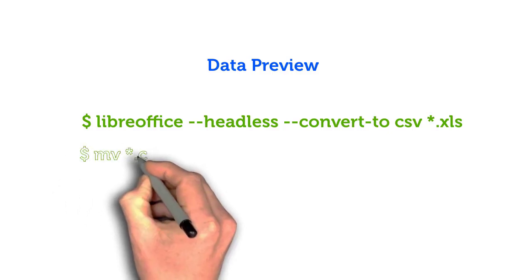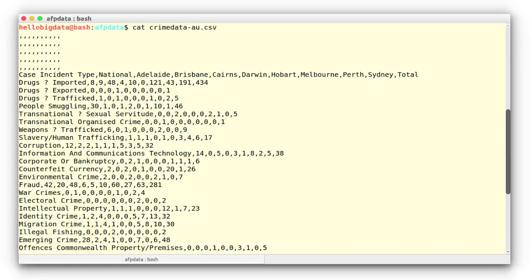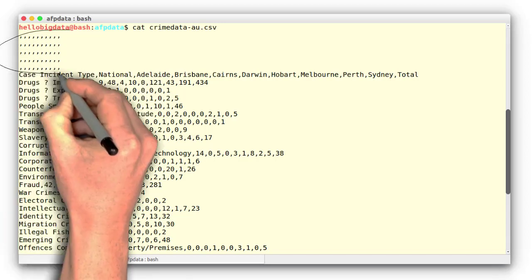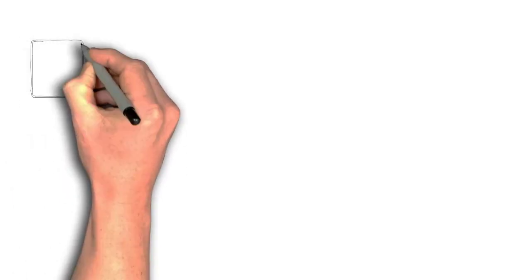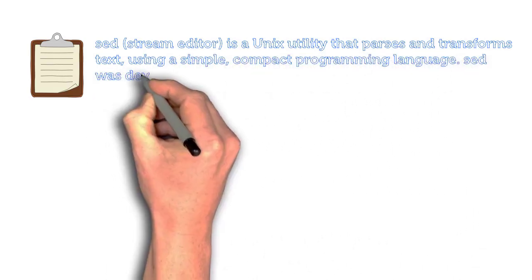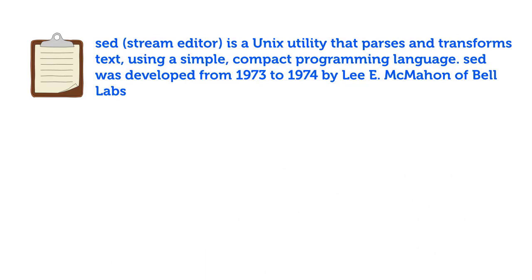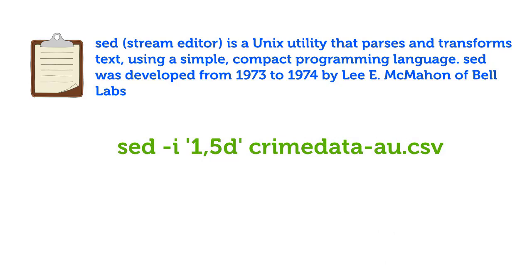Awesome! Next, what we'll do is get a sneak peek of our data. As a quick reminder, the cat command shows us all the lines in a file. As you can see, there are five rows with no data — they are occupied by a series of commas. We want to wipe out these rows using sed, the stream editor. Let's run the following command. This will, in place due to the option "-i", delete the first five lines from the file.